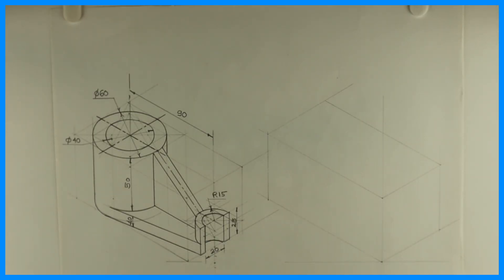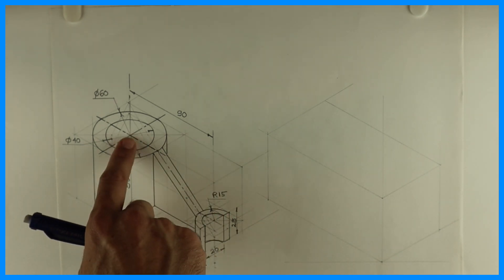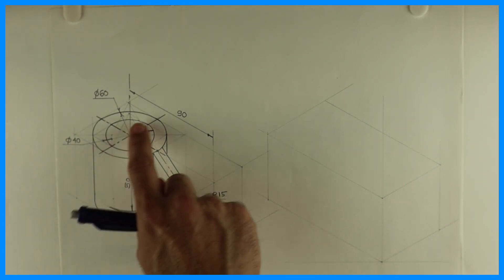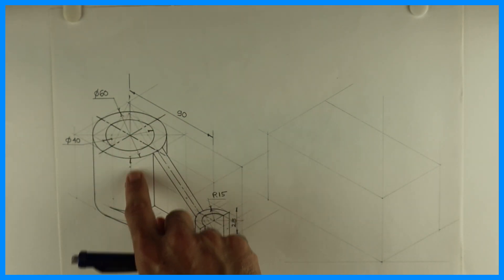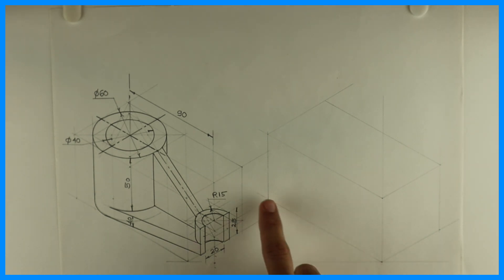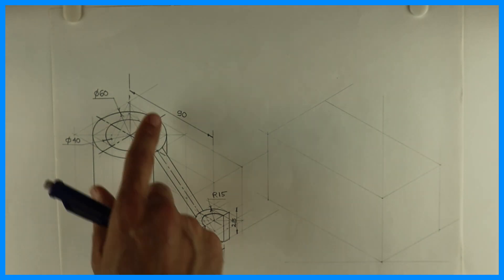Welcome to technical drawing. Today we are going to draw this copy isometric. If you see, the length is 90 plus 30, that is 120, width is 60, and height is 60. This is 60, 50 plus 10. First we will draw the layout, after that we'll start with the circle.